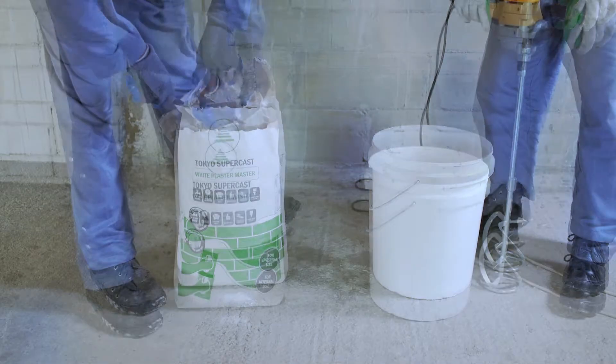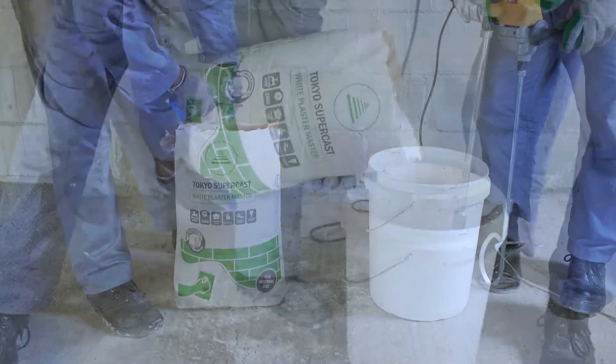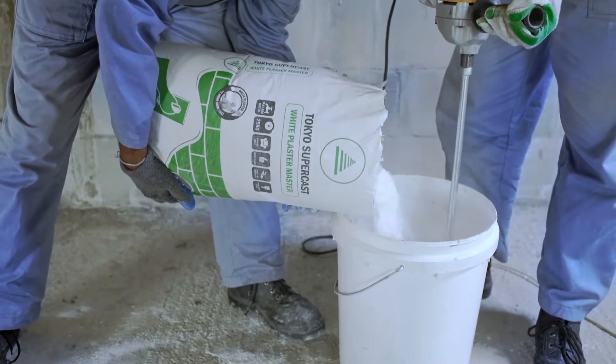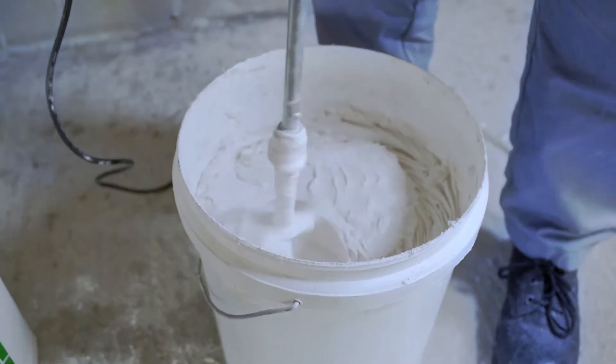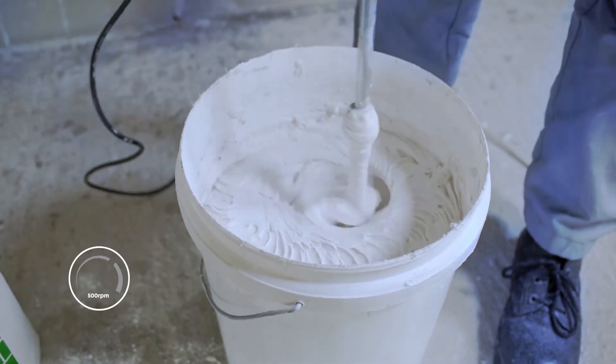Next, gradually empty a 25 kg bag of Tokyo Supercast White Plaster Master into the bucket while mixing the solution with a stirrer set at a speed below 500 rpm.